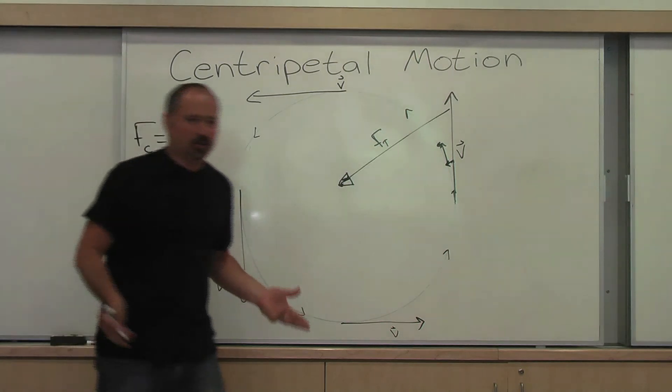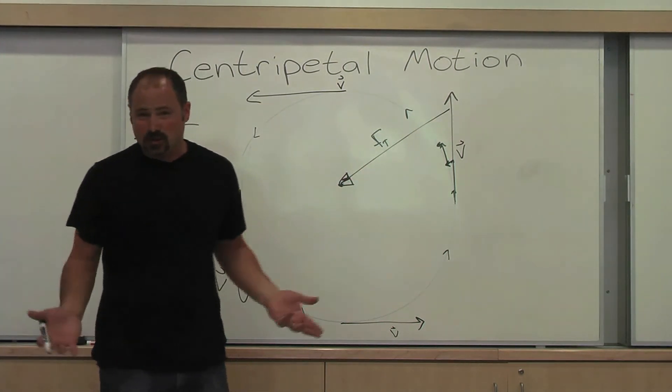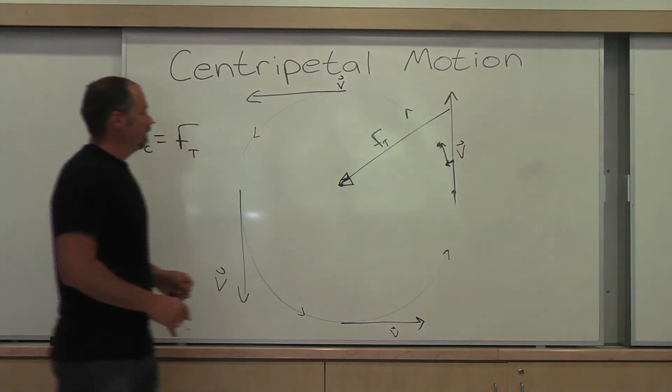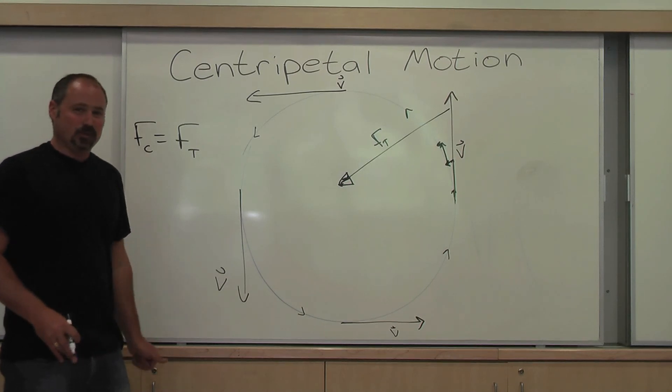For example, the earth goes, approximately, goes in a circle around the sun. What's the centripetal force there? Well, it's the force of gravity. There you go. Brief explanation of centripetal motion.